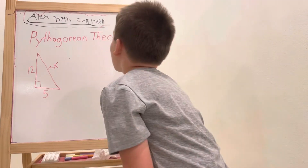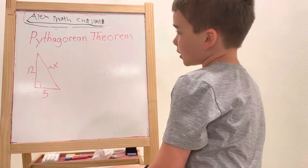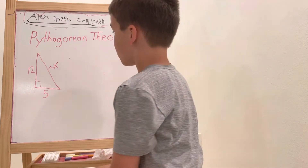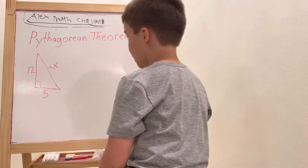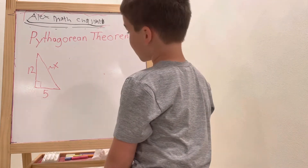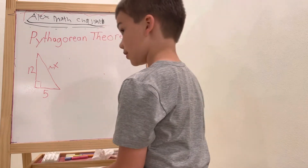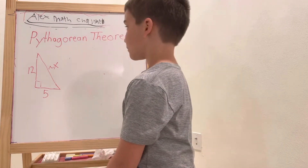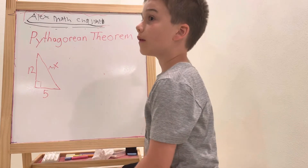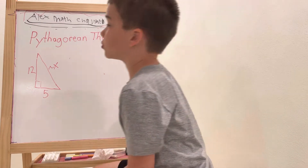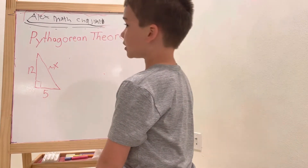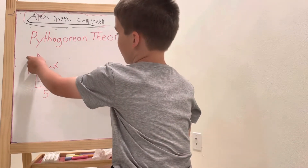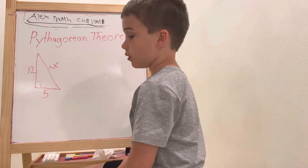So today we're going to be talking about the Pythagorean Theorem. The first question you might have is: what on earth is the Pythagorean Theorem? The Pythagorean Theorem is a rule that says all triangles with right angles must satisfy leg squared plus leg squared equals hypotenuse squared.